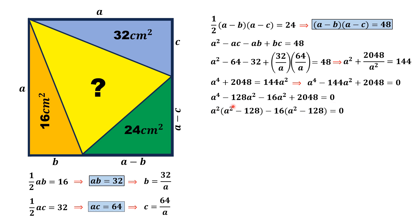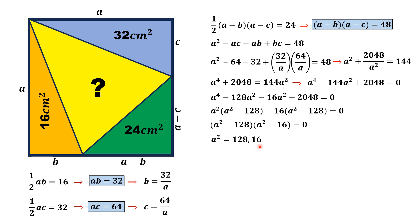So a⁴ minus 128a² minus 16a² + 2048 = 0. Taking a² common from the first two terms and minus 16 from the last two terms, we get the factored form: (a² minus 128)(a² minus 16) = 0. From here, a² has two values: 128 and 16.